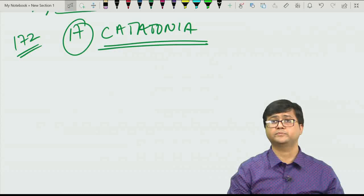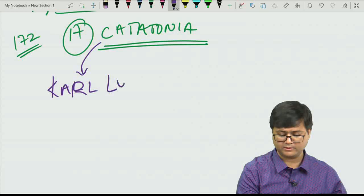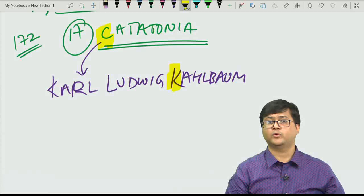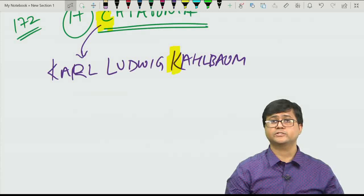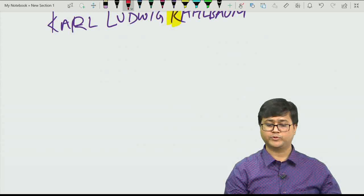Catatonia is a cluster of various motor symptoms. The term catatonia was described by Karl Ludwig Kahlbaum. There are many clinical features and not all patients will have all of them. The first clinical feature is stupor — no or severely decreased psychomotor activity.